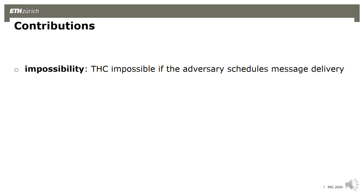In fact, we rule out quite a lot of settings because we only assume that honest parties are already synchronized — messages between honest parties are delivered synchronously with a known upper bound — but the adversary can schedule messages between corrupted parties and their neighbors, and this already rules out topology-hiding computation.